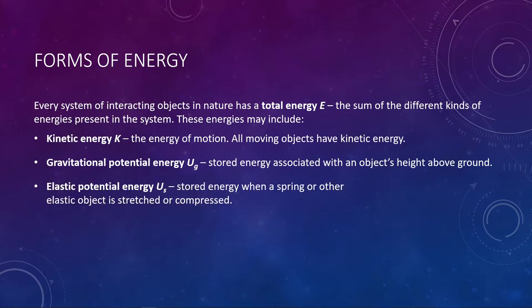Next is elastic potential energy, sometimes called spring potential energy because it's often associated with springs. It also gets capital letter U, but with subscript S to denote the spring nature of it. Being potential energy, this is also energy that is stored and waiting to be used — specifically when a spring or elastic object is stretched or compressed. If you take a somewhat rigid spring and try to stretch it out, you can feel that spring trying to pull back toward the equilibrium position. Same if you compress it — you can feel that energy waiting to be used because it wants to push back out against you.